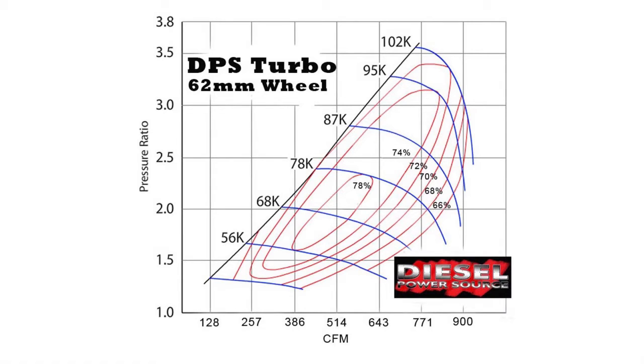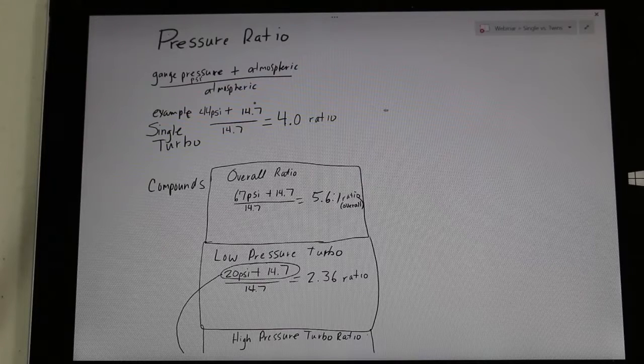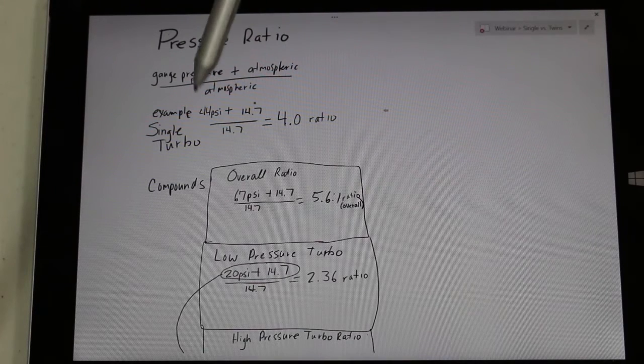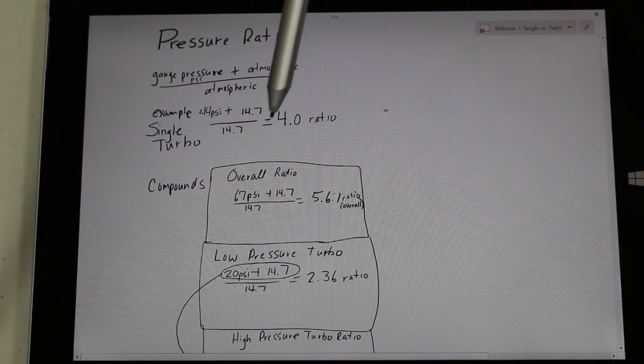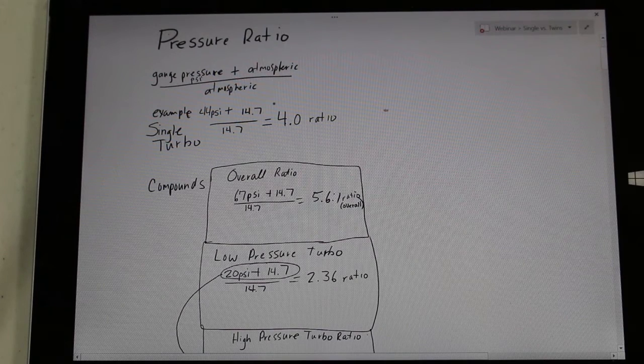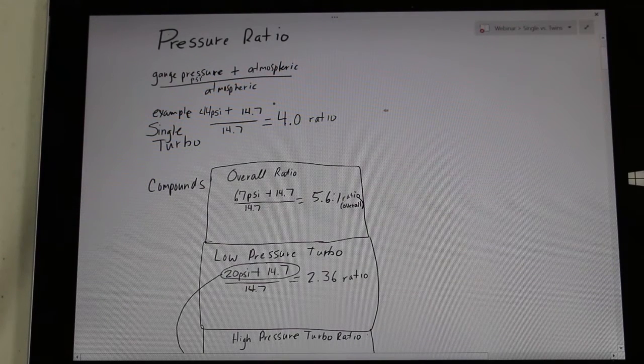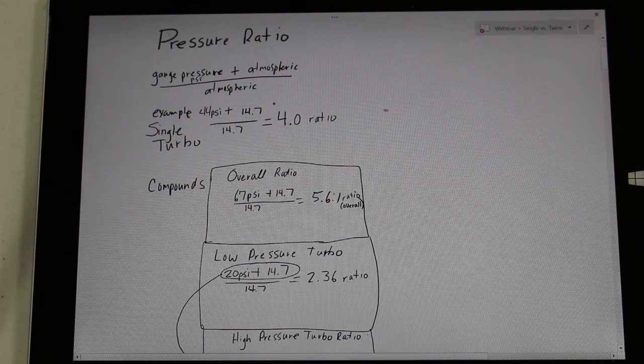But the true pressure wherever your gauge reads is 14.7. So you're going to take that amount and add it to the boost pressure you see on your gauge. In this case, we've got 44 PSI plus the 14.7 PSI. Then you divide that amount by the 14.7.